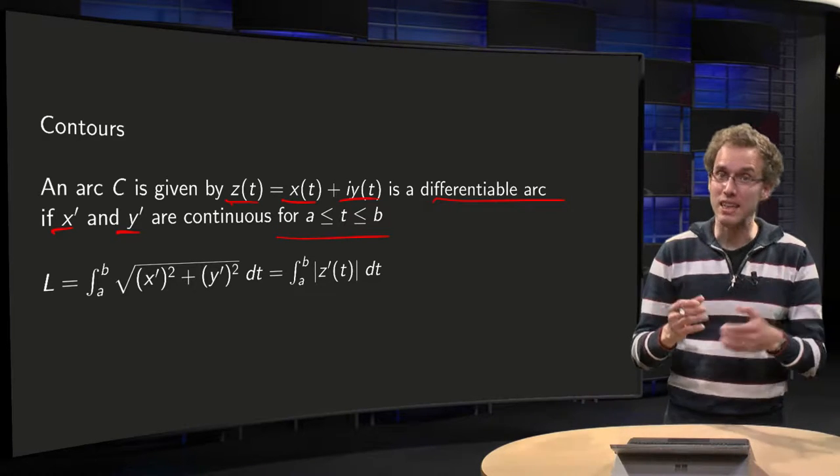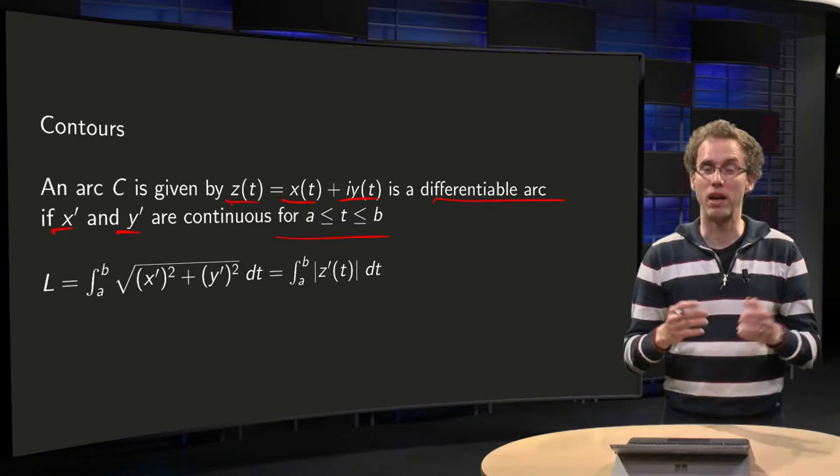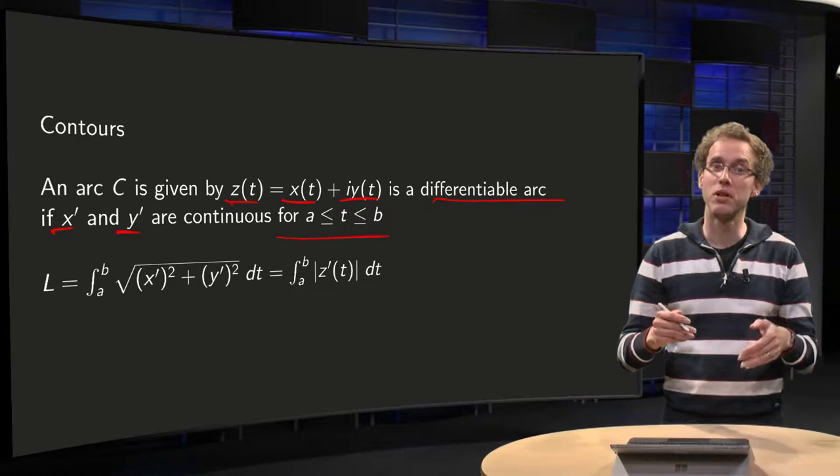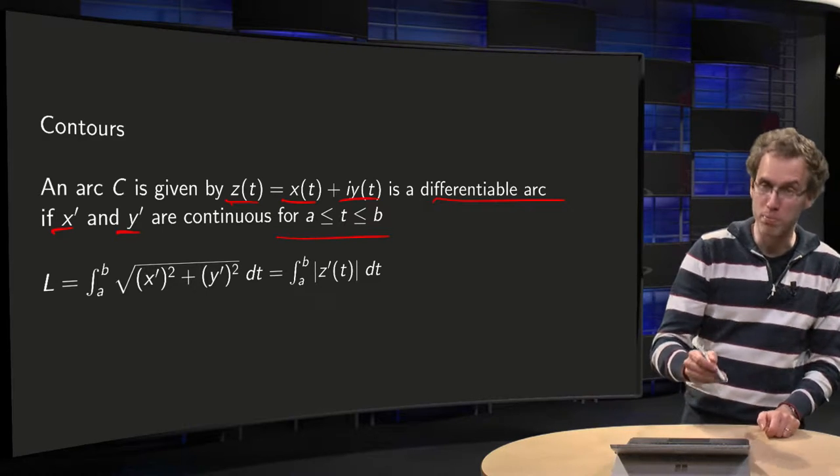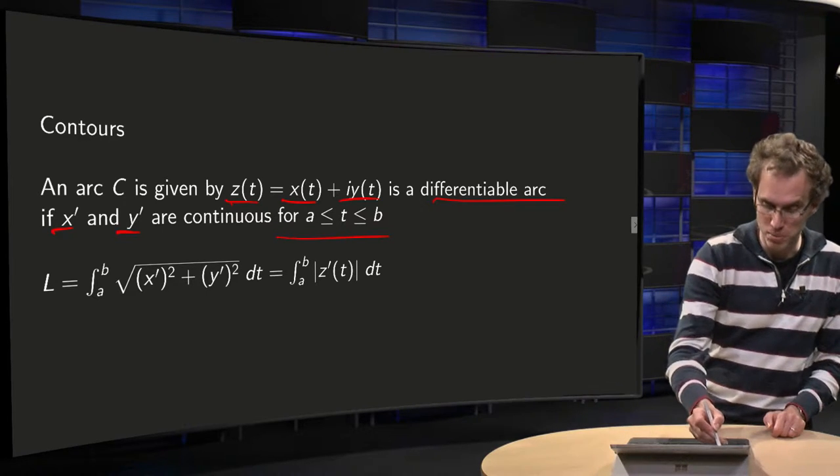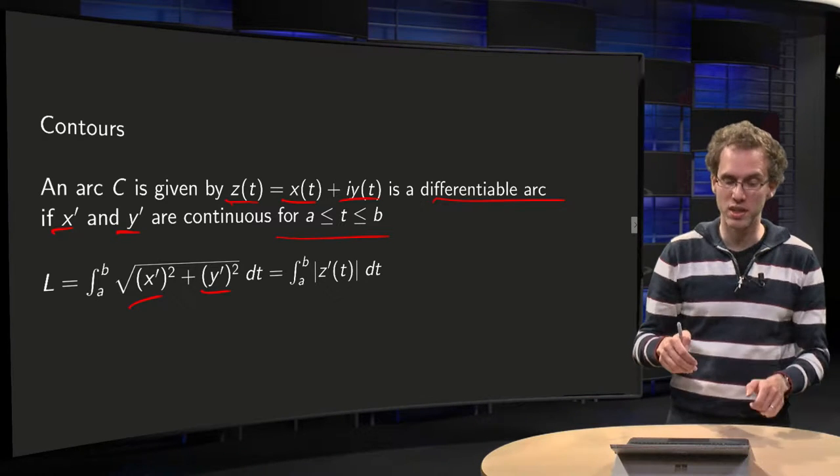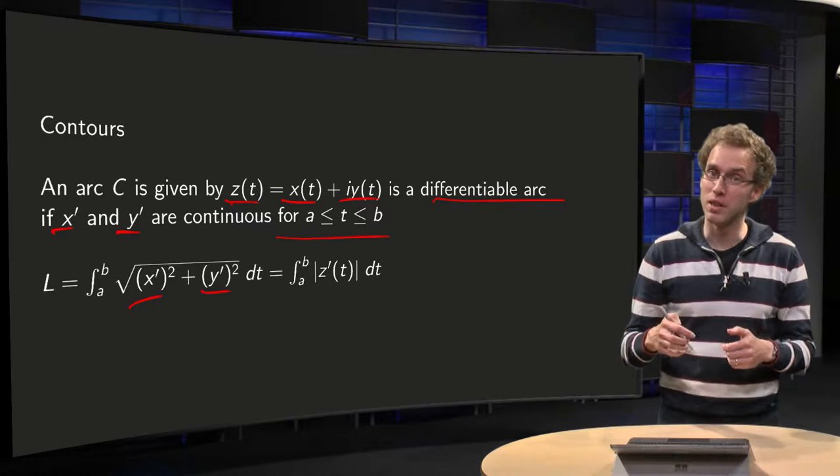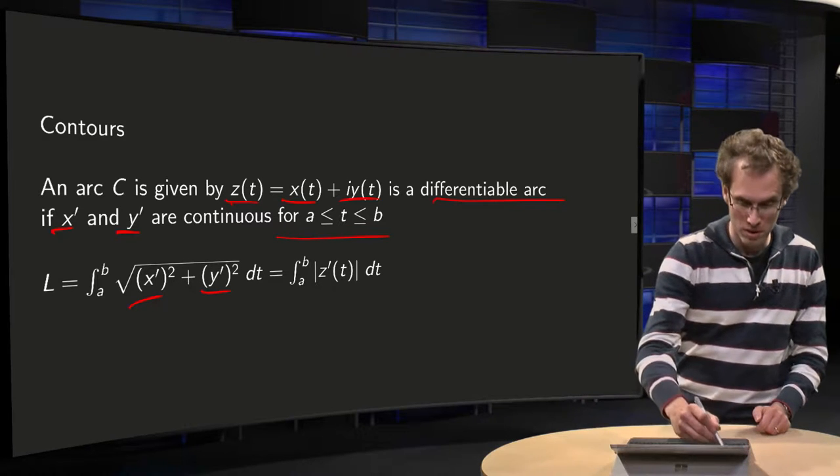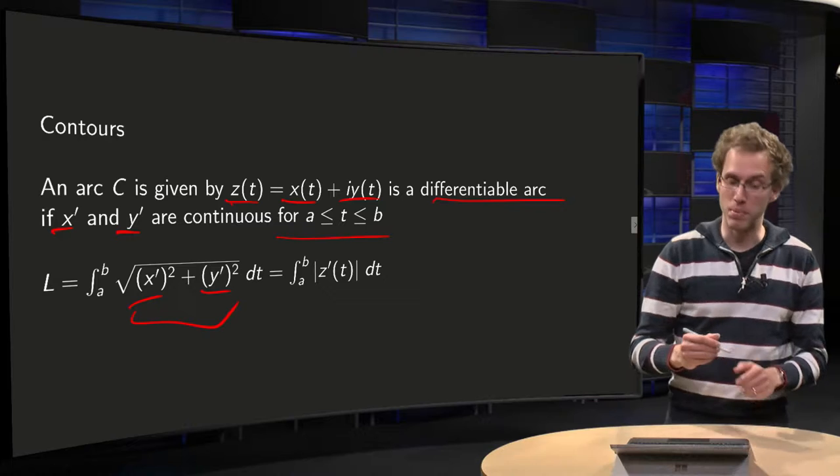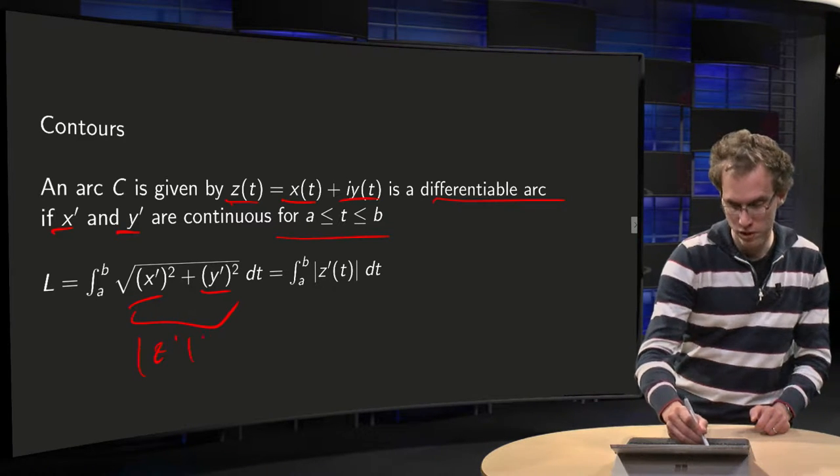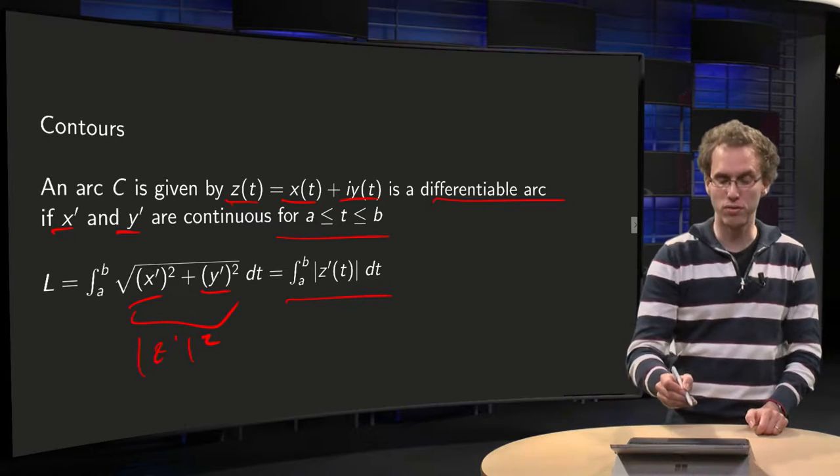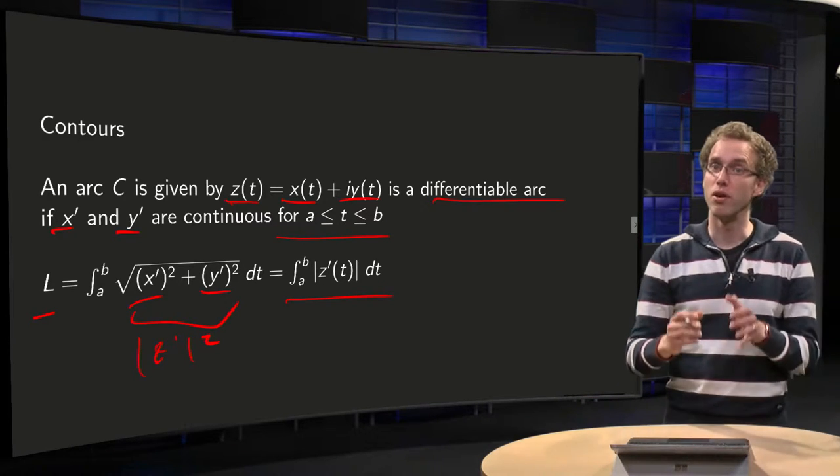So in that case you can compute the length. It's a formula you know from the basic calculus course. The length of a curve parameterized by t equals x' squared plus y' squared, take the square root and integrate. And in the context of complex analysis it becomes really nice because this x' squared plus y' squared is exactly the norm of z' squared. Take the square root, you just get the norm of z', so you get this nice formula for the length of such a curve.